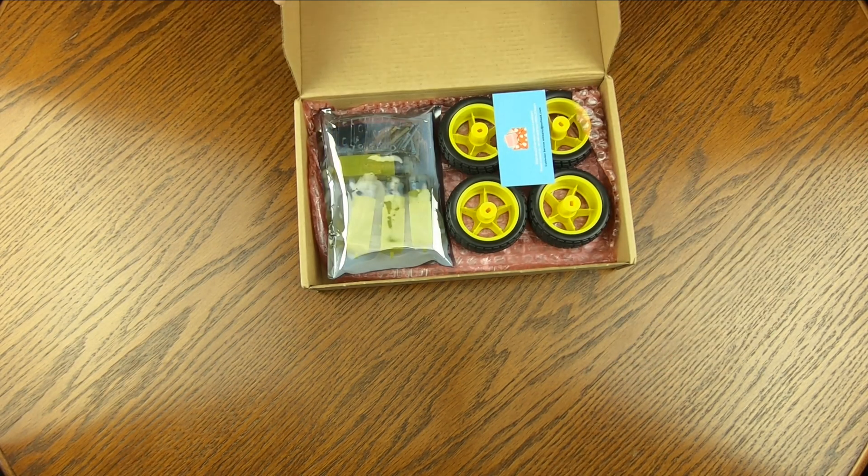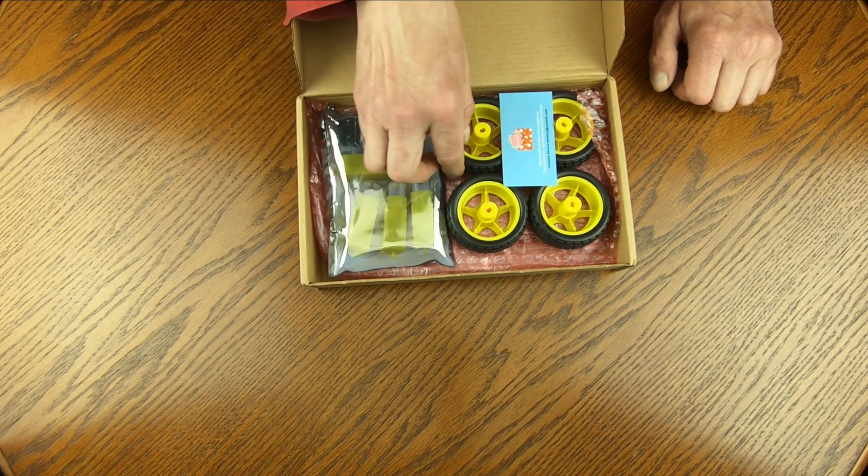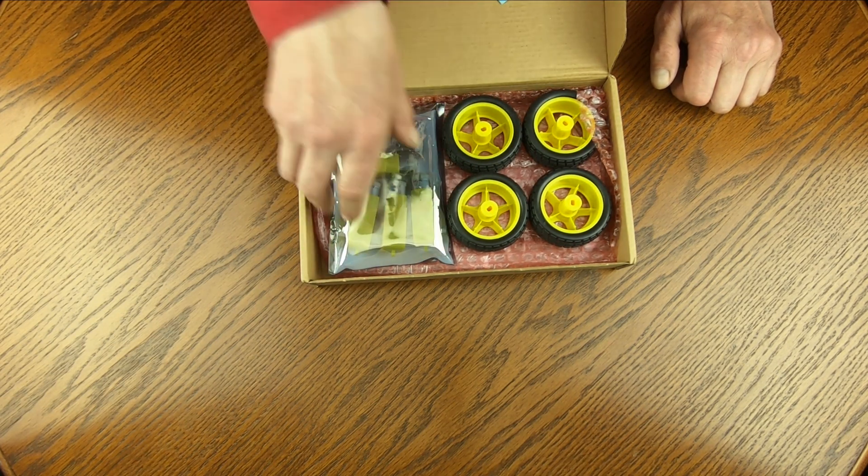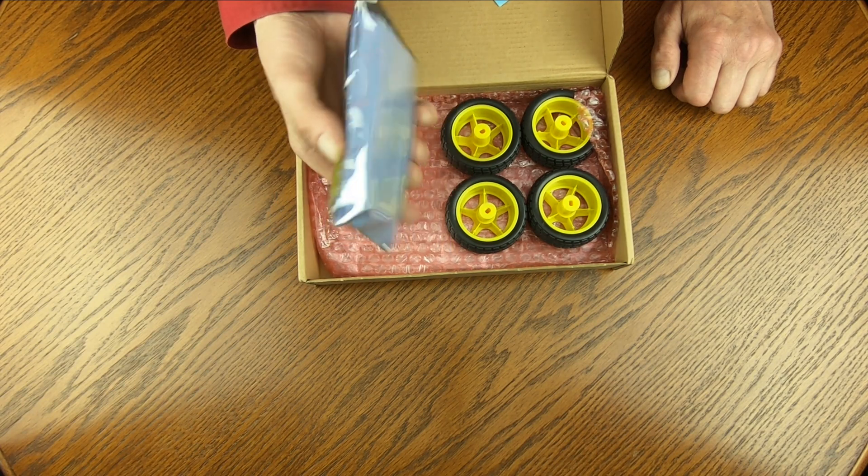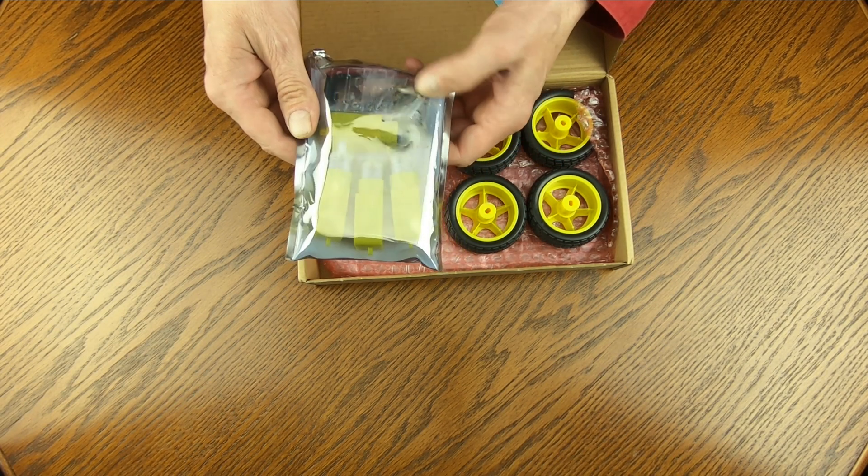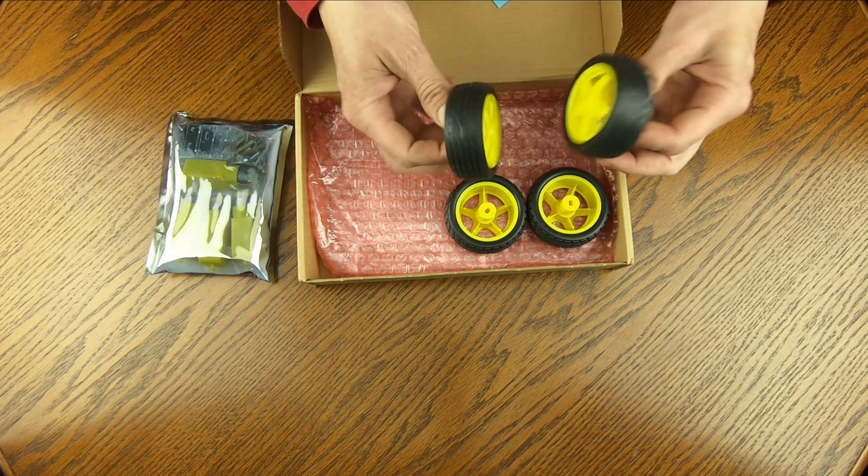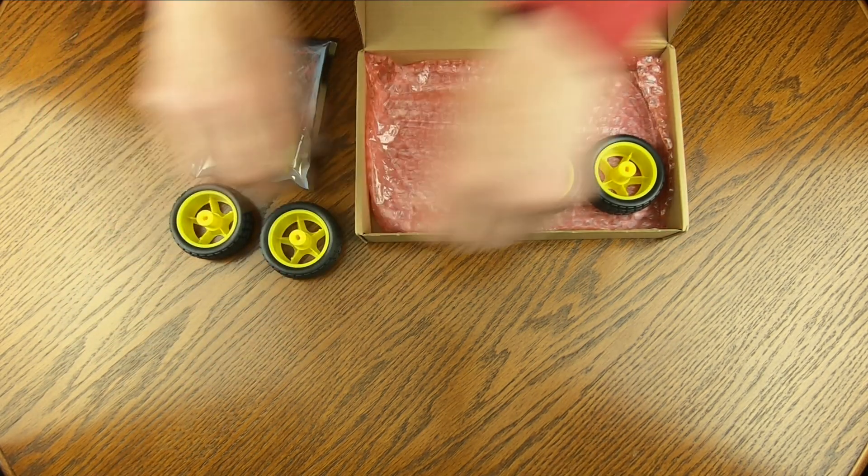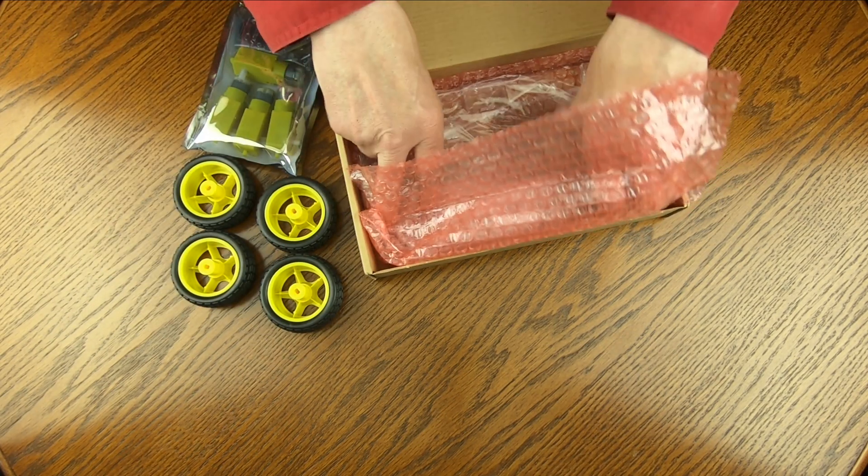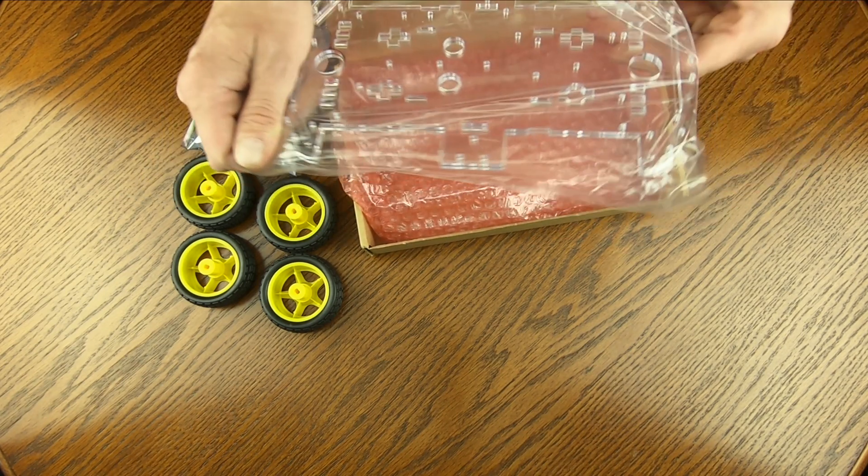It does come in a nice box and everything does appear to be packaged fairly decently. There's a little bubble wrap in there. I don't really see the necessity of overpacking it because most of this would be pretty hard to damage anyway. So we got our four geared robot motors there and our assembly hardware. We got the four matching wheels. And then wrapped in the bubble wrap is the chassis assembly.